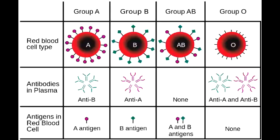What does it mean if you are RH positive? If you are RH positive, that means you have an RH antigen on your RBC surface. A situation that can arise in pregnancy is if the mother is RH negative and the father is RH positive, then there is a chance the fetus could also be RH positive, and the mother can be exposed to the fetus's RH positive blood — this often happens during delivery.